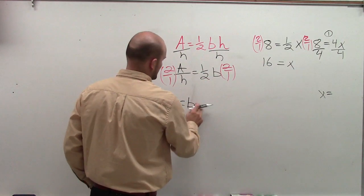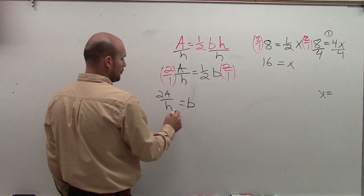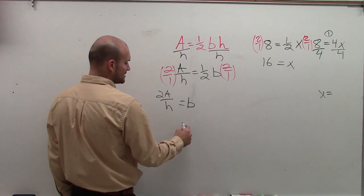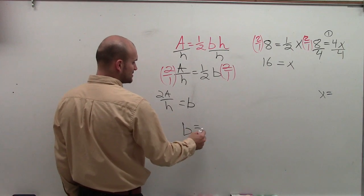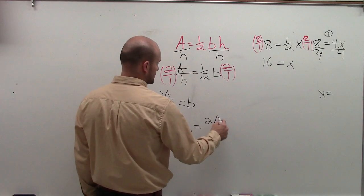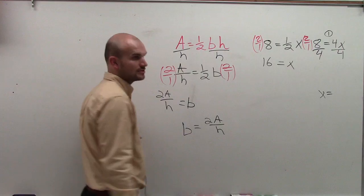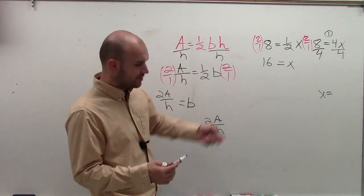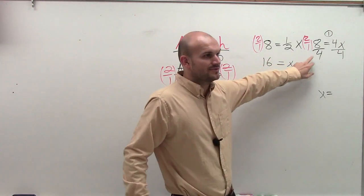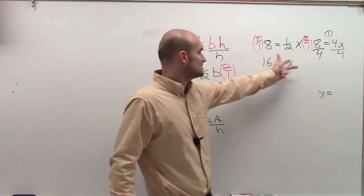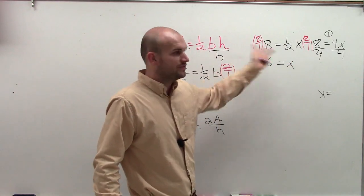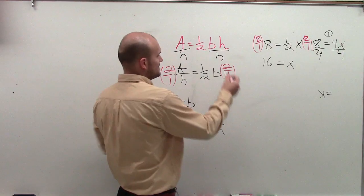Let's actually write it this way. b equals 2a over h. And then we always like to rewrite with our variable first that we're solving for, b equals 2a over h. Make sense? So when you're doing literal equations, and you're kind of getting stuck, I sometimes like to write, make up my own problems. That's going to kind of mock them. And then you can do them at the same time, too.